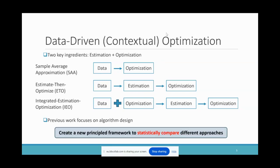Previous research in this area focuses on how to design algorithms or demonstrate their general effectiveness. However, direct statistical comparisons among different approaches are not well investigated in the literature. In this work, we address this fundamental question. We create a principled framework to statistically compare different approaches, which appears to be the first result in the nonlinear objective setting.